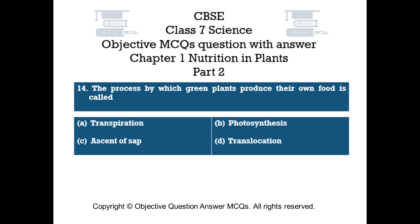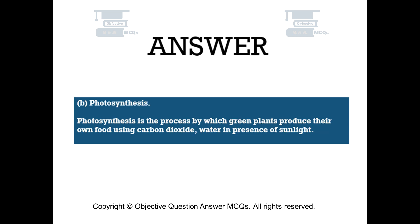Question number 14: The process by which green plants produce their own food is called. Option A: transpiration. Option B: photosynthesis. Option C: ascent of sap. Option D: translocation. The right answer is option B — photosynthesis. Photosynthesis is the process by which green plants produce their own food using carbon dioxide and water in the presence of sunlight.